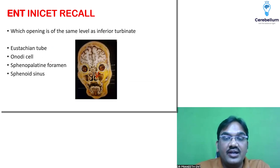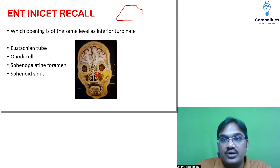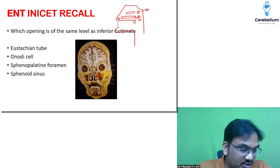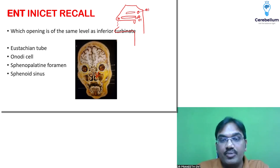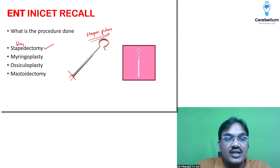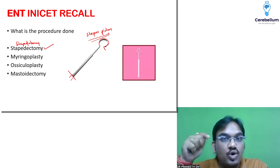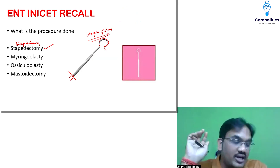Which opening is at the same level as the inferior turbinate? In your nasal cavity, the inferior turbinate is present, and just about one centimeter posteriorly you have the opening of the Eustachian tube. Behind the middle turbinate you have the opening of the sphenopalatine foramen. Regarding the previous question: whether it is stapedotomy or stapedectomy, you use the piston in both. The difference is that in stapedectomy the entire footplate is removed, whereas in stapedotomy you create a fenestration in the footplate.